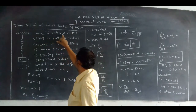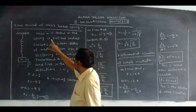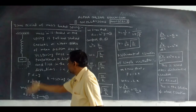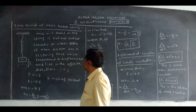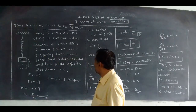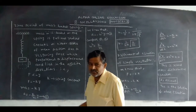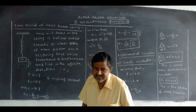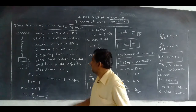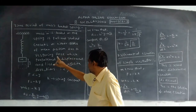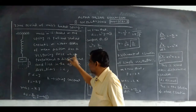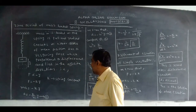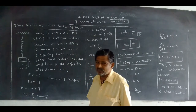Mass M is loaded on the spring, pulled and released, and it executes oscillations on either sides of the mean position. Why does it oscillate on either side? Due to the restoring force, which is proportional to displacement and acts in the opposite direction.